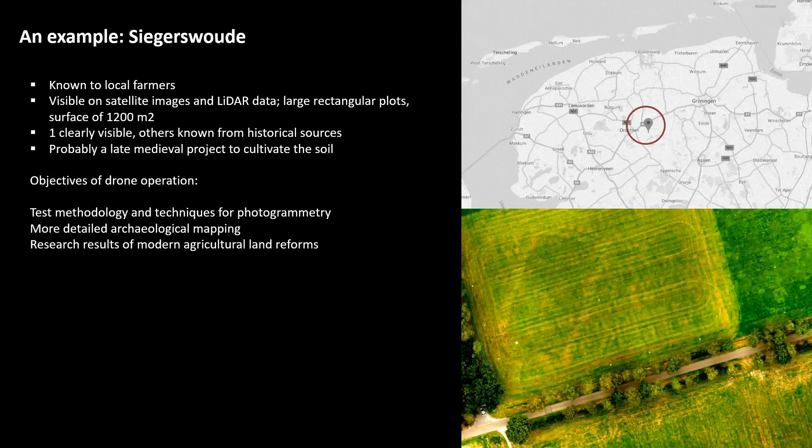Siegerswoude is an archaeological site known to local farmers. It is also visible on satellite images and LiDAR data, and it takes the shape of large rectangular plots defined by ditches that encompass a surface of around 1,200 square meters. One of these plots is clearly visible in the aerial photograph, and others can be deduced from historical sources that probably relate to a late medieval project to cultivate the soil. The objectives for drone operation here were to test the methodology for drone photogrammetry, produce detailed archaeological mapping, and research the results of modern agricultural land reforms.